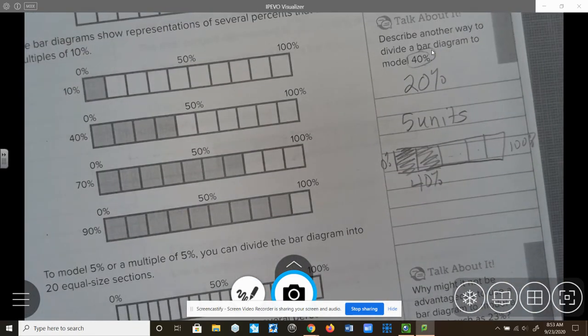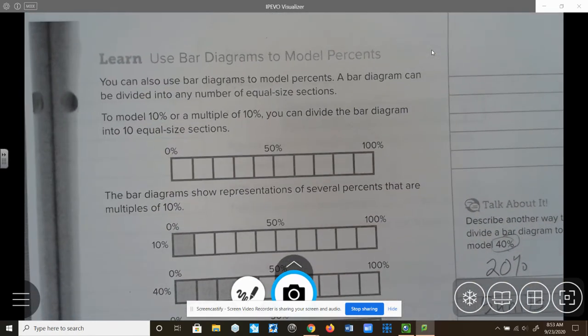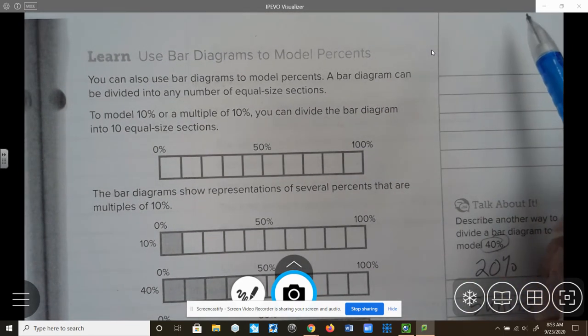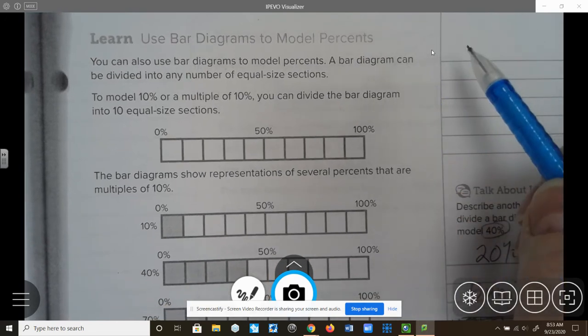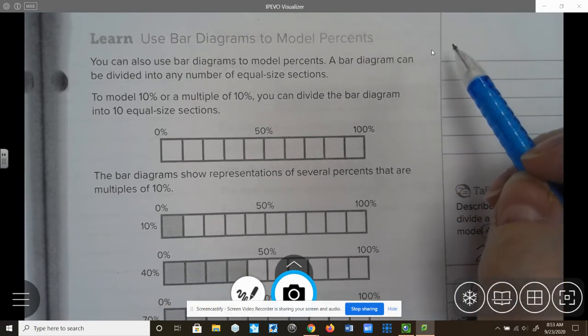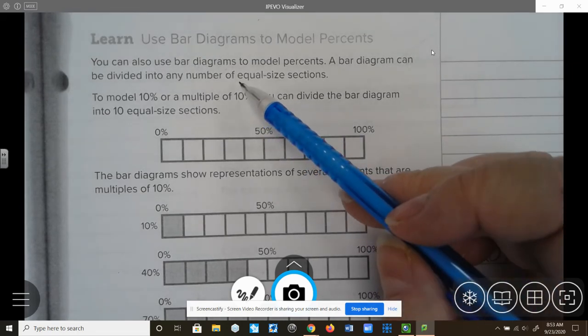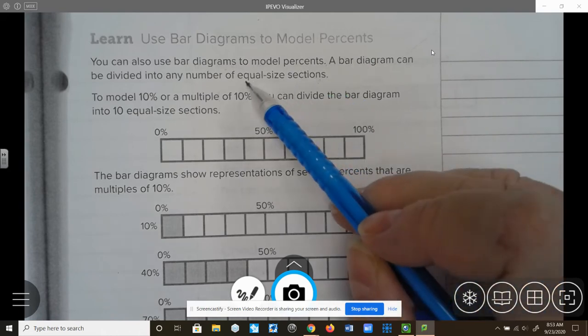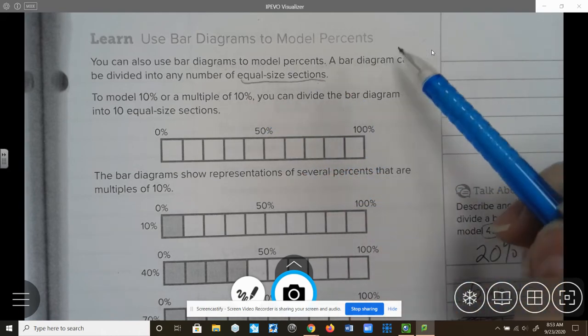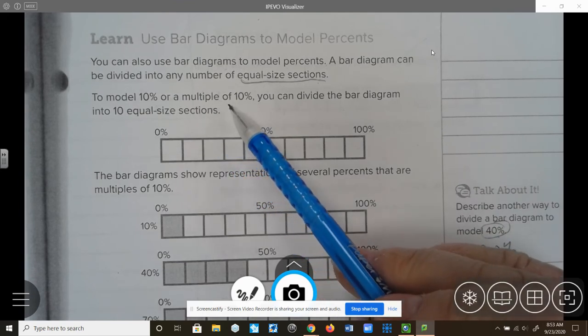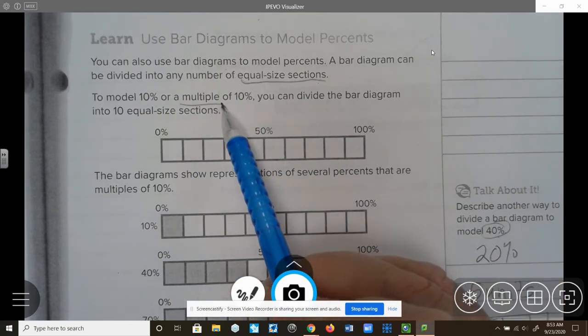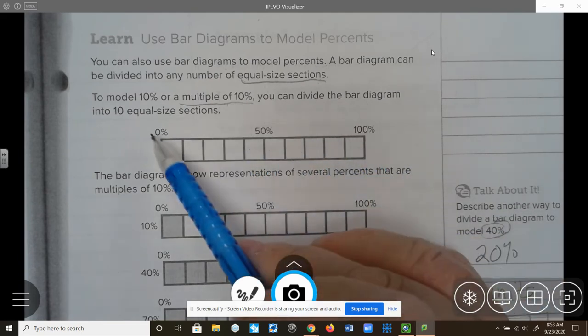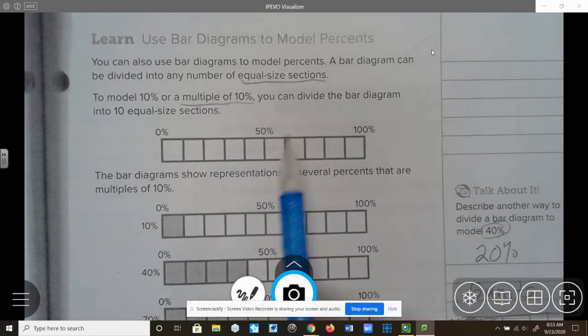Continuing on to page 81, the very top of 81, let's look at now some bar models. So we've worked on the 10 by 10 grids. Now let's look at bar models, which we started using in Module 1 when we looked at ratios. You can also use the bar models to represent percents. A bar model can be divided into any number of equal sections. That's an important thing to remember. To model 10% or a multiple of 10. Multiples of 10%. You can divide the bar diagram into 10 equal sections.